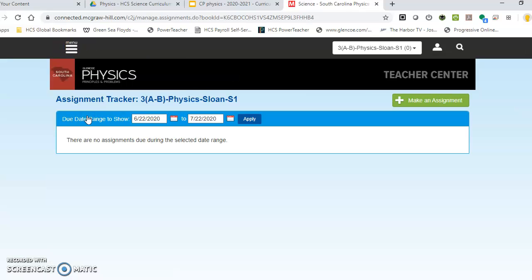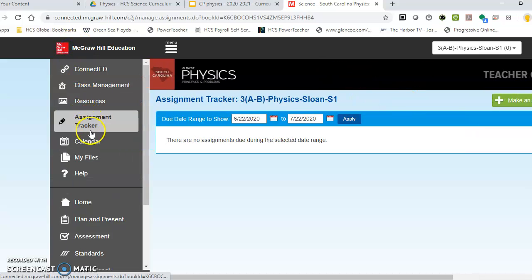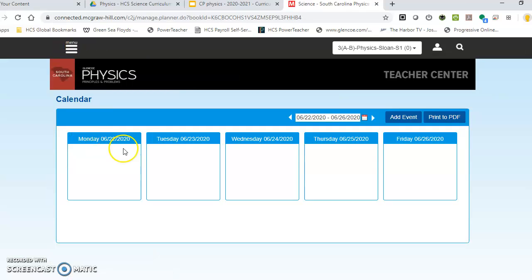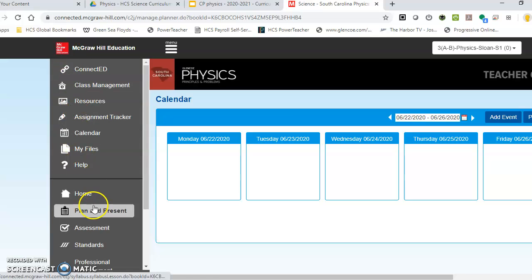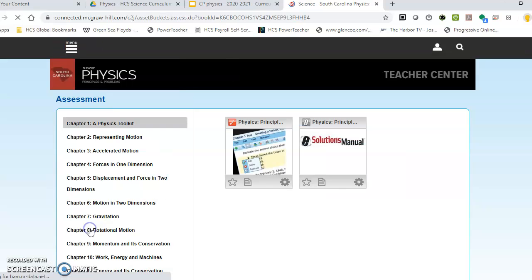That's just basically saying, I'm going to make an assignment and I'm going to say when it starts and when it ends. Then you have a calendar. The calendar is where you can put information in so you can look at it. And then you have your assessments. Like I said before, you have two sets of assessments and most of them are already there. So you don't have to worry about that.